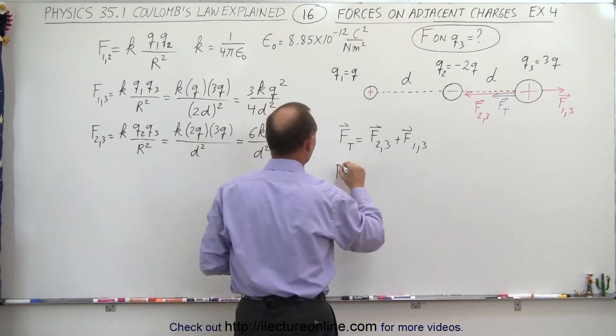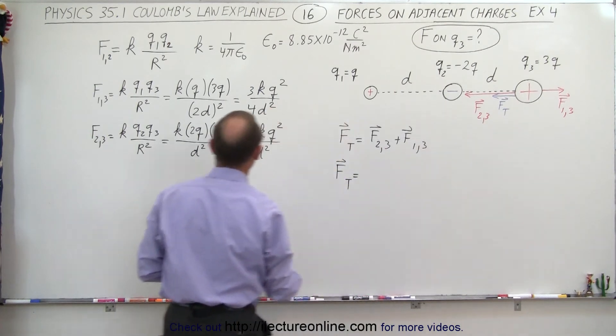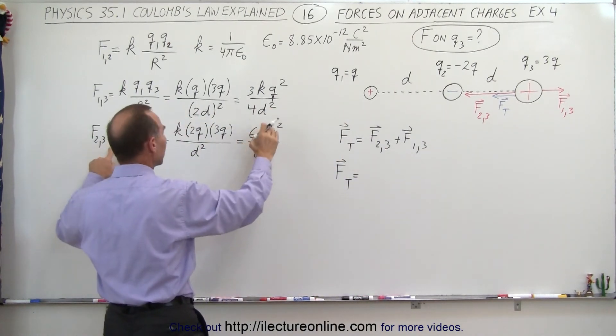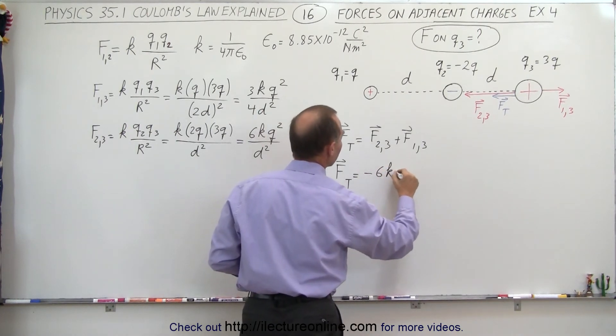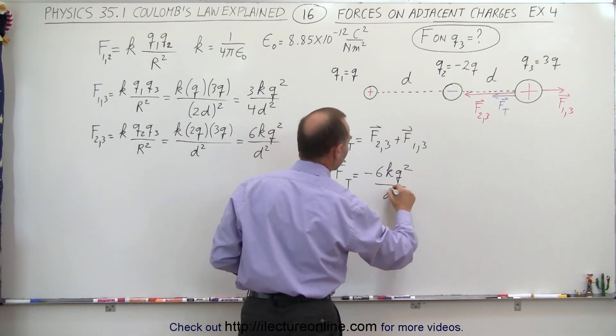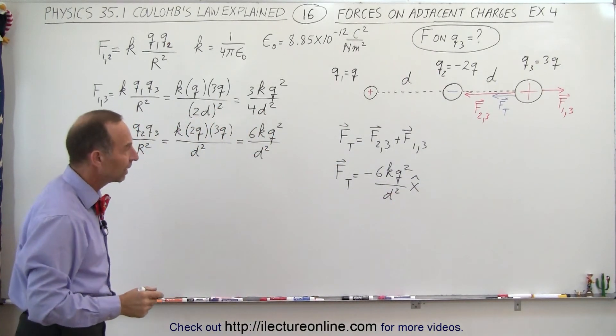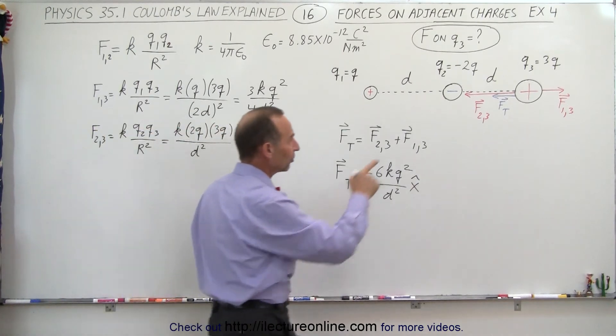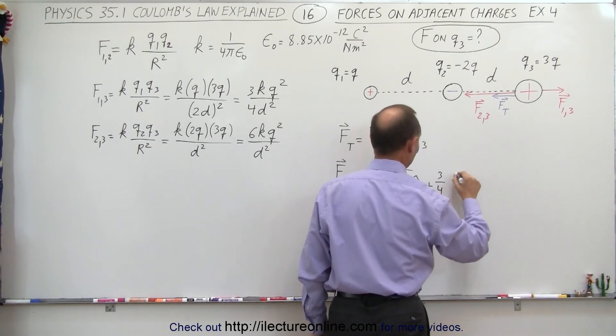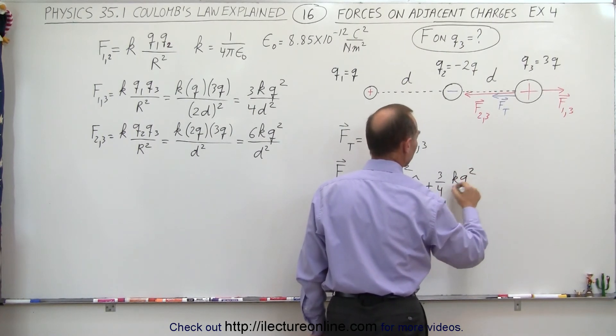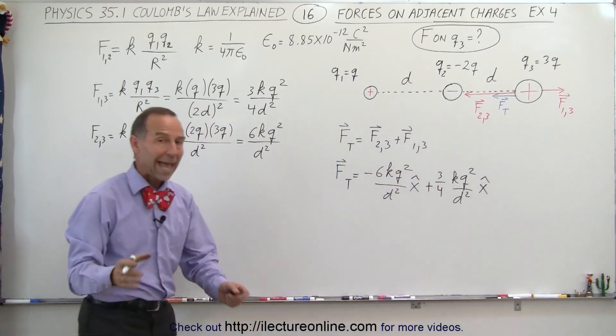So F total is equal to, since F2,3 is pointing to the left side, here's the magnitude between F2,3, but it's in the negative direction, so we write negative 6KQ² divided by D². And of course, we have to indicate the direction, so we have unit vector X. And then we add to that, because that's pointing to the right, plus, and it's 3 quarters, KQ² over D² in the X direction, so that would be positive.